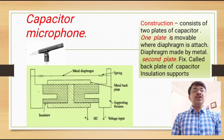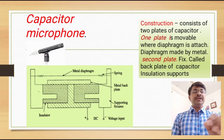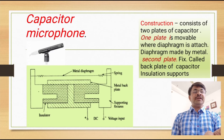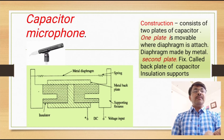As you can see on your screen, this is the image of the capacitor microphone and this is the internal diagram. It consists of two plates of a capacitor, so it is called a capacitor microphone. Out of the two plates, one plate is movable because the diaphragm is attached to one of the plates. The diaphragm is made of metal material. The second plate is fixed, also called the back plate of the capacitor.